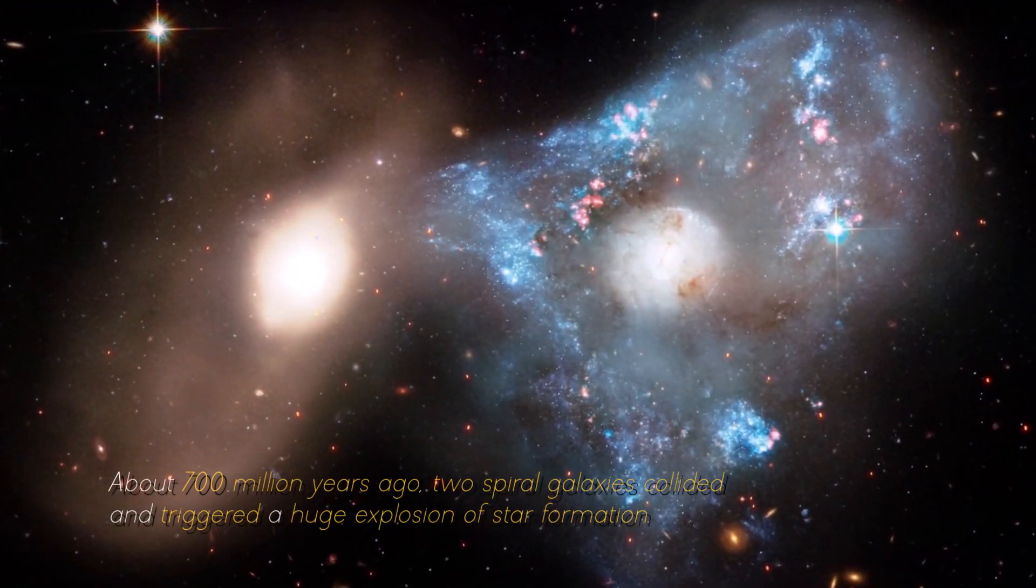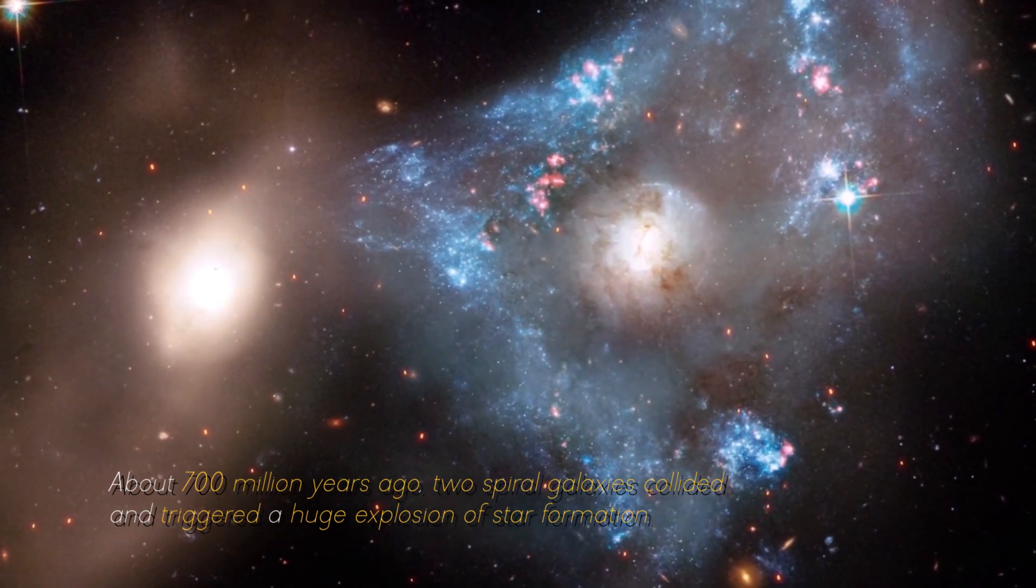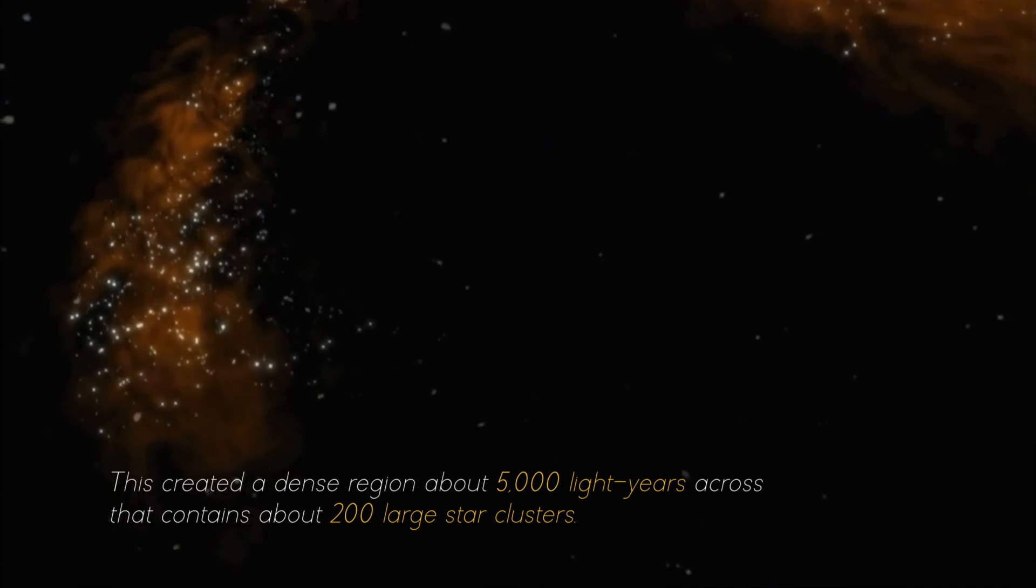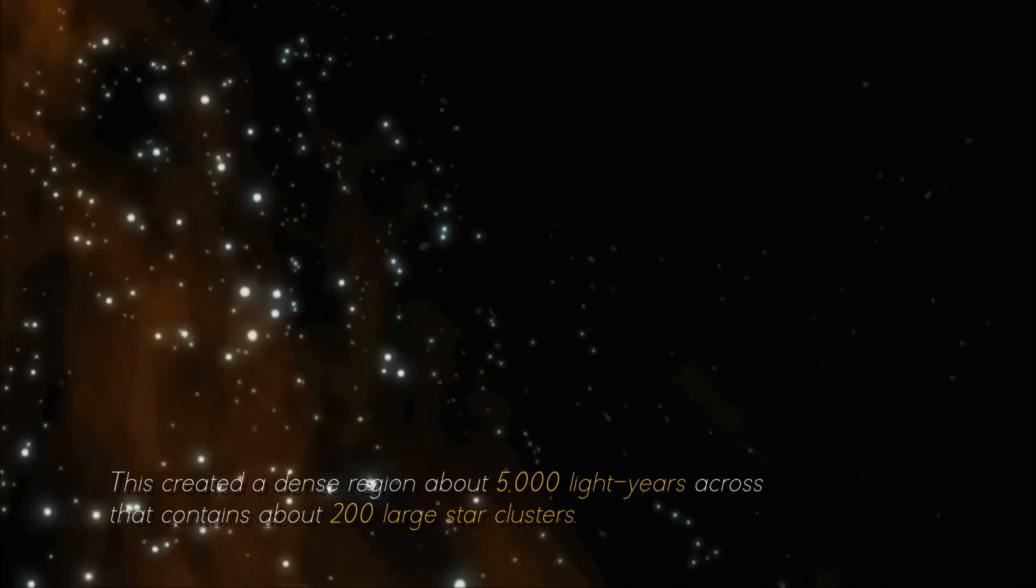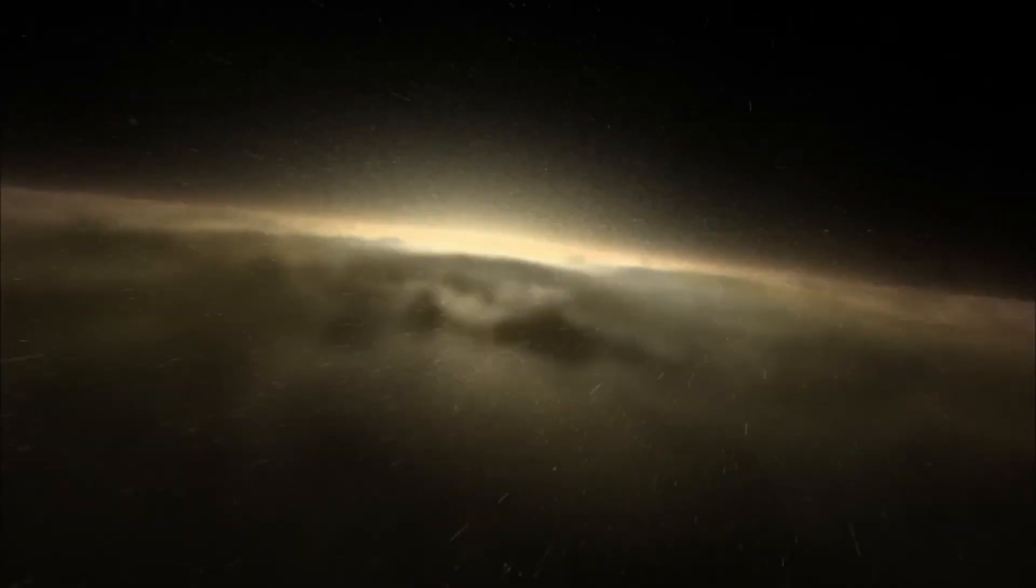About 700 million years ago, two spiral galaxies collided and triggered a huge explosion of star formation. This created a dense region about 5,000 light years across that contains about 200 large star clusters. Surprisingly, this small area contains as much gas as the entire Milky Way.